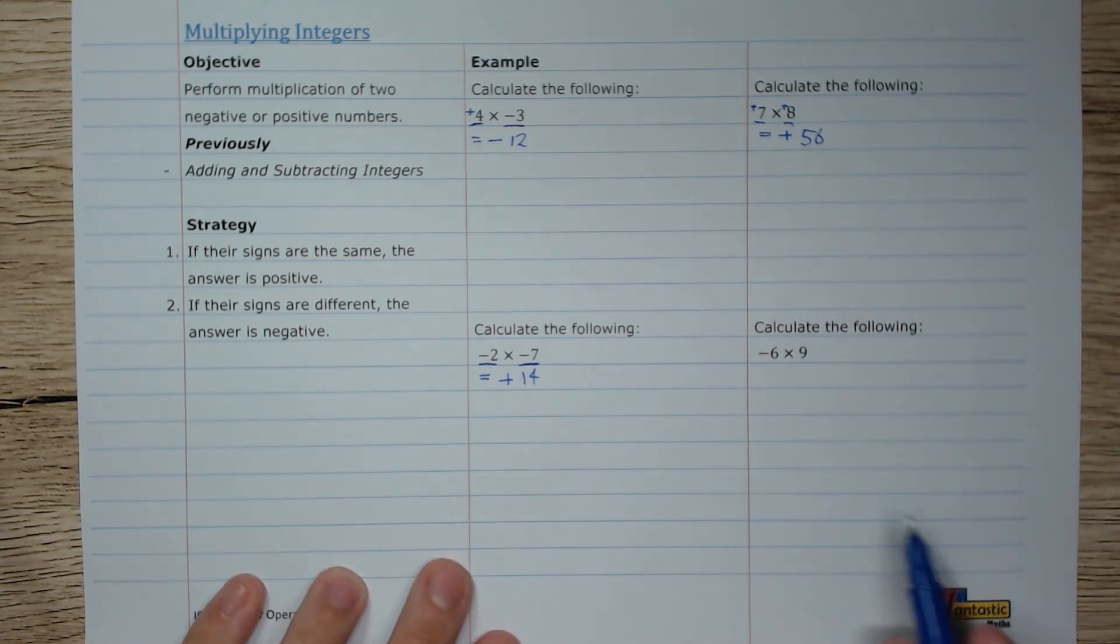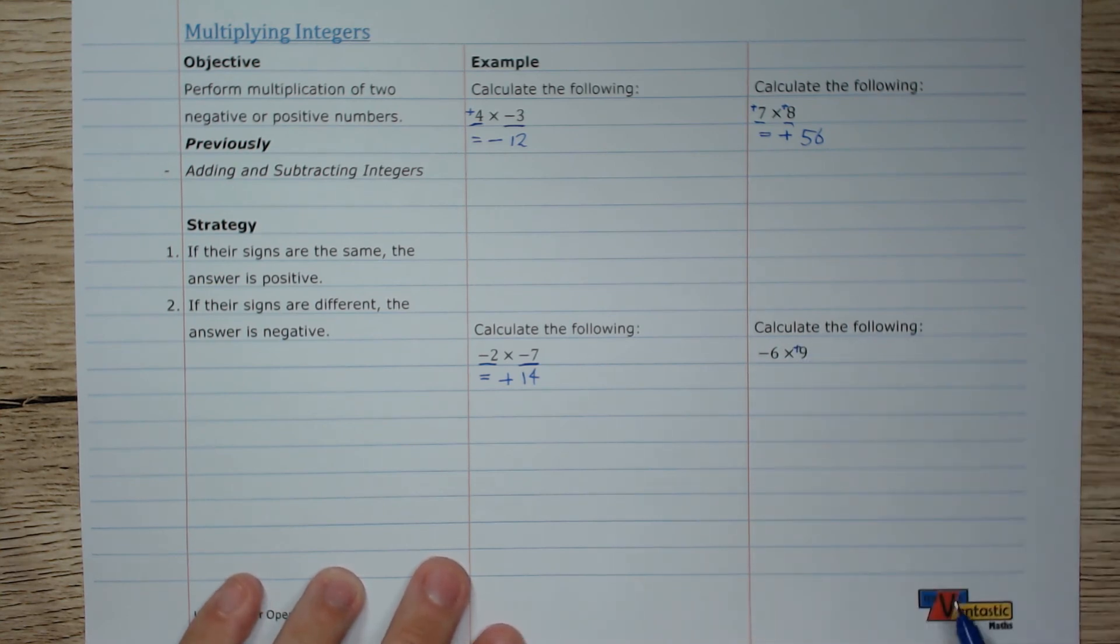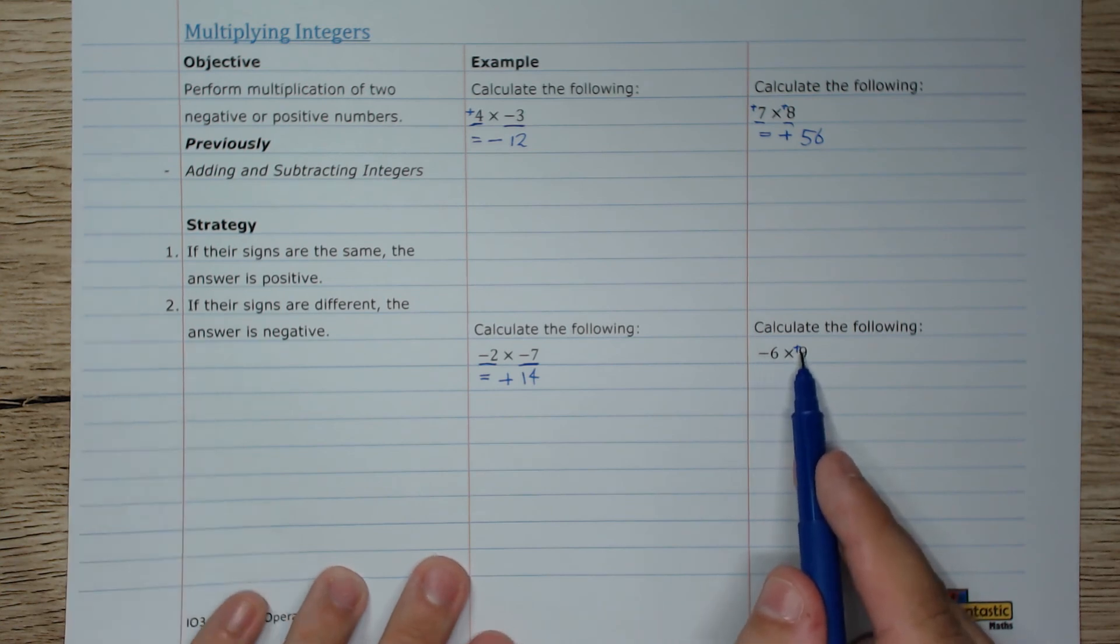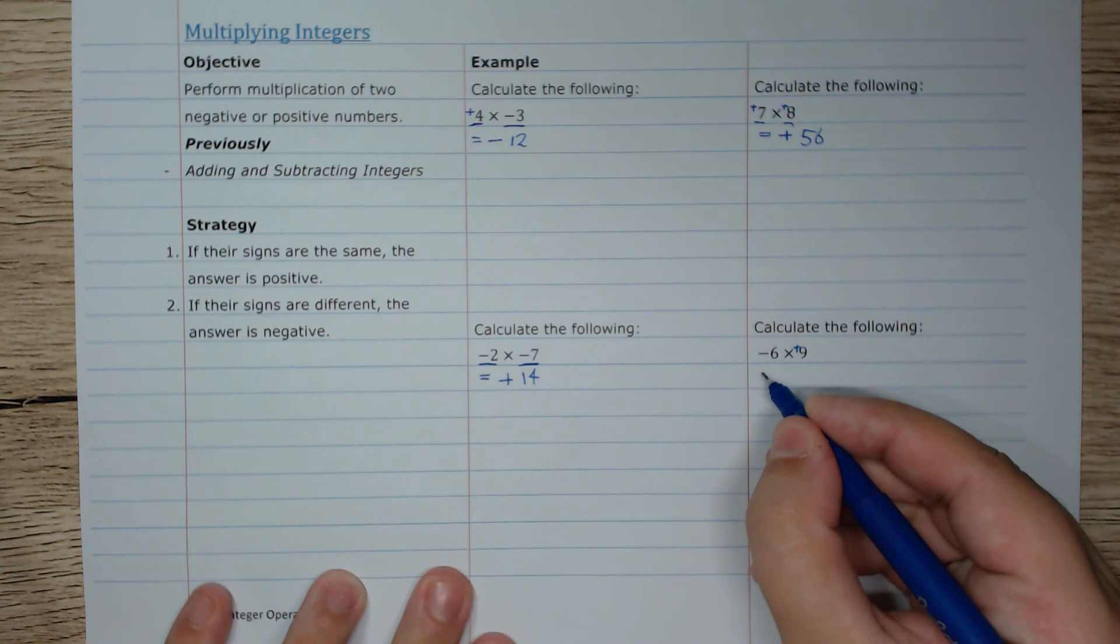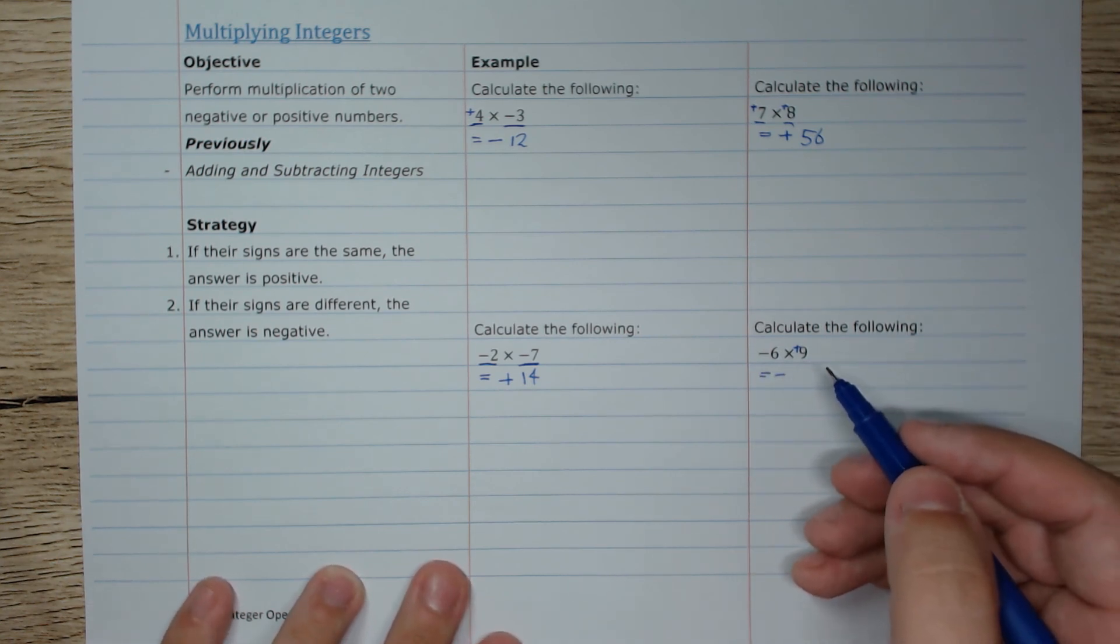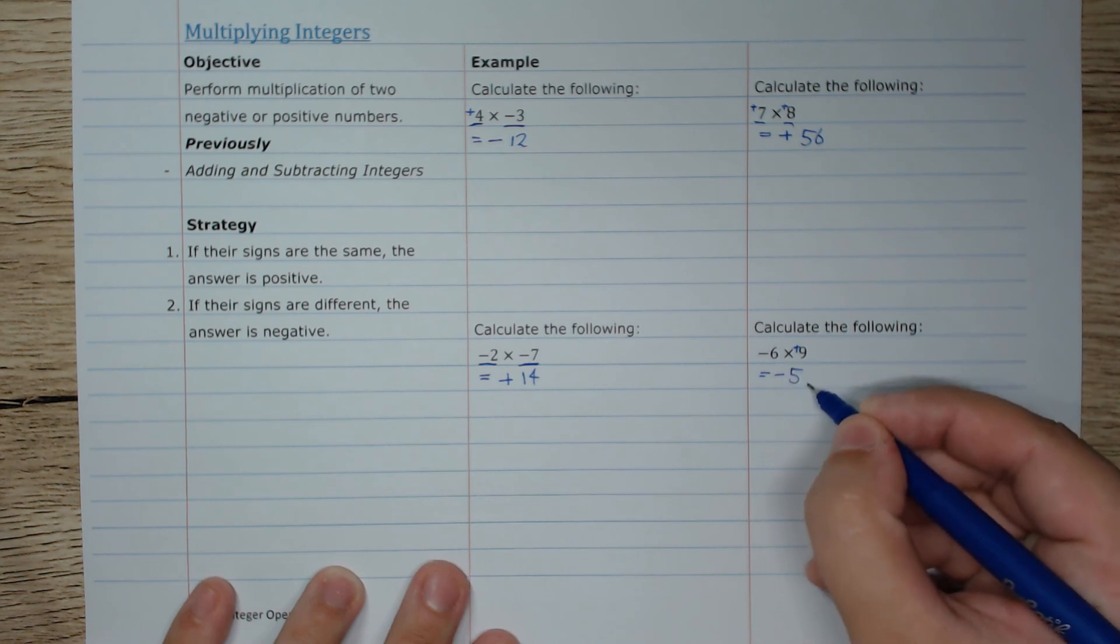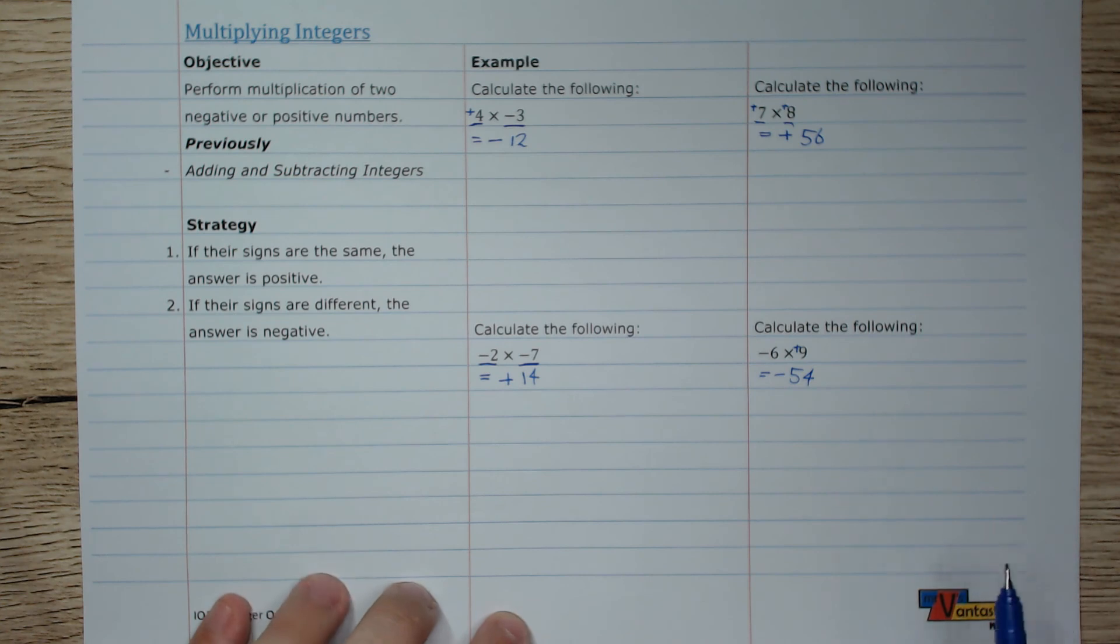And let's look at our last one. We have negative 6 times 9. That 9, yes, it's going to be positive. Minus and positive, they're different, so our answer is going to be negative. Negative 6 times 9 is 54. So negative 6 times 9 is negative 54.